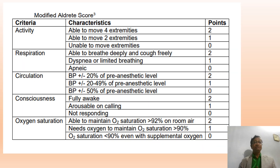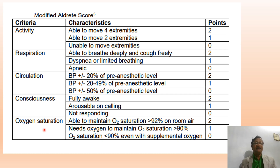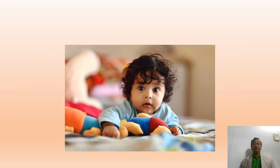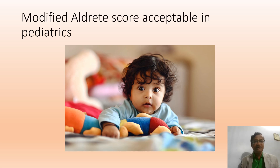A score of 9 or above is needed for shifting the patient out of the PACU. The modified Aldrich score is: Activity (4-2-0), Respiration (able to breathe deeply and cough freely / dyspnea or limited breathing / apnea), BP, Consciousness (fully awake / arousable on calling / not responding), and SpO2 (≥92% / 90–92% / <90%). A score of 9 is acceptable for discharge.